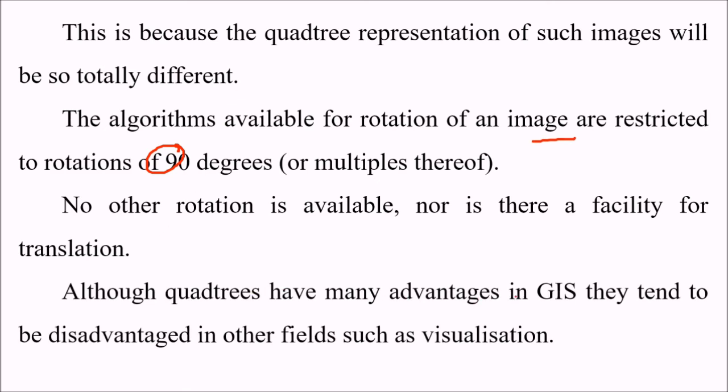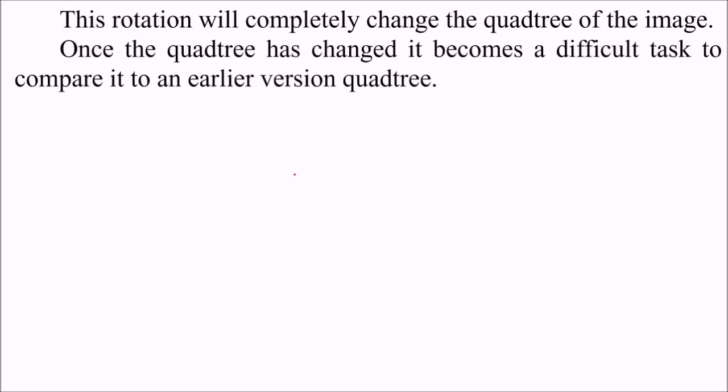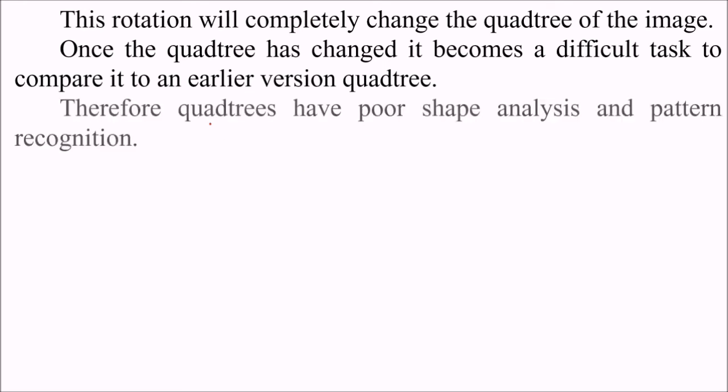Although quadtrees have many advantages in GIS, they tend to be disadvantaged in other fields such as visualization. The problem starts to occur when the image is rotated. This rotation will completely change the quadtree of the image. Once the quadtree has changed, it becomes a difficult task to compare it with an earlier version of the quadtree. Therefore quadtrees have poor shape analysis and pattern recognition.